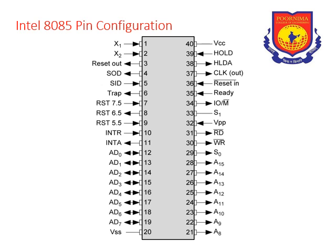Pin number 20 is VSS, which is the ground. Pin numbers 21 through 28 are A8 to A15, which are the higher-order address lines. Pin numbers 29 and 33 are S0 and S1, which are control signals. Combining S0 and S1 gives us the possible operational values.